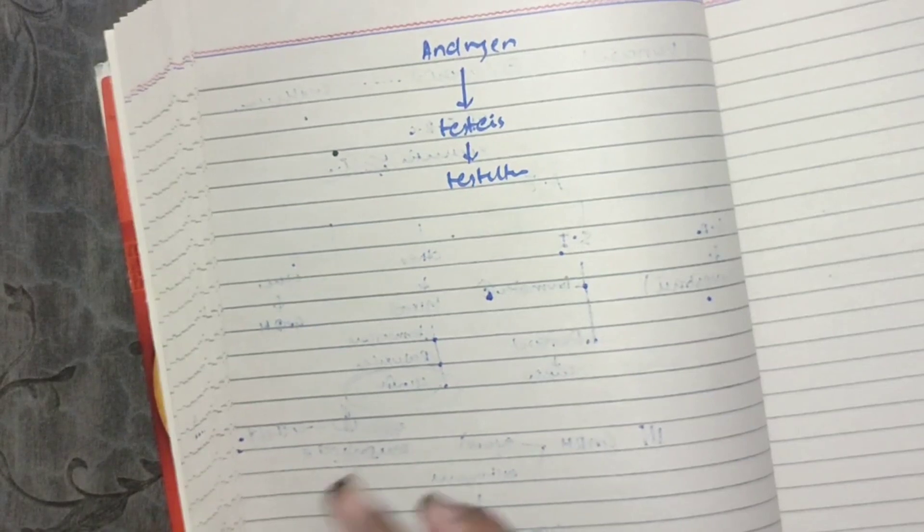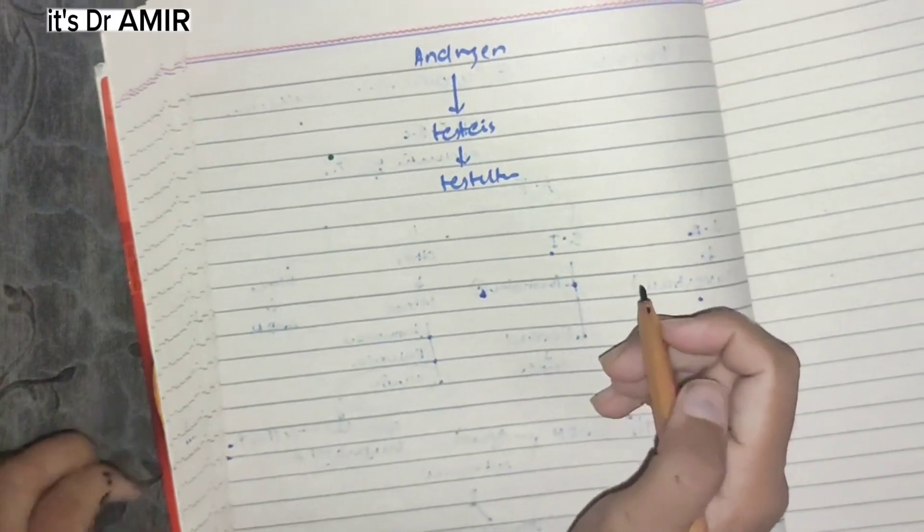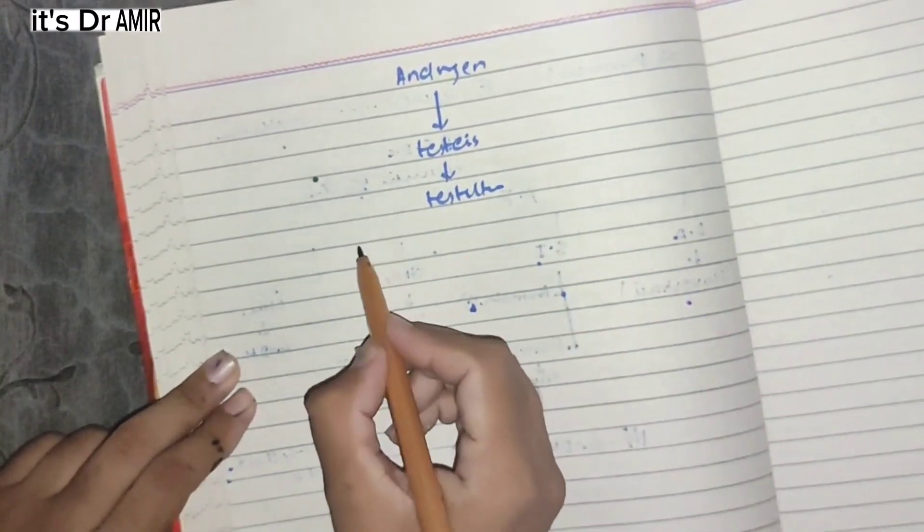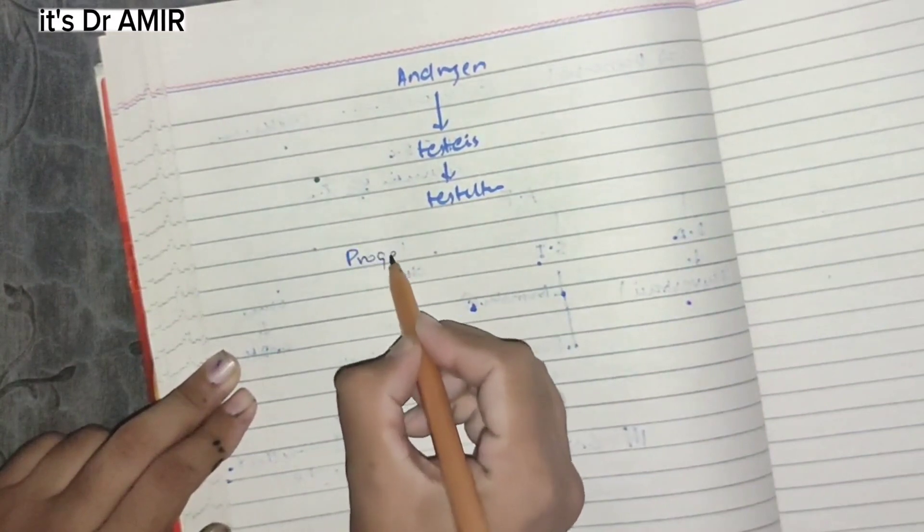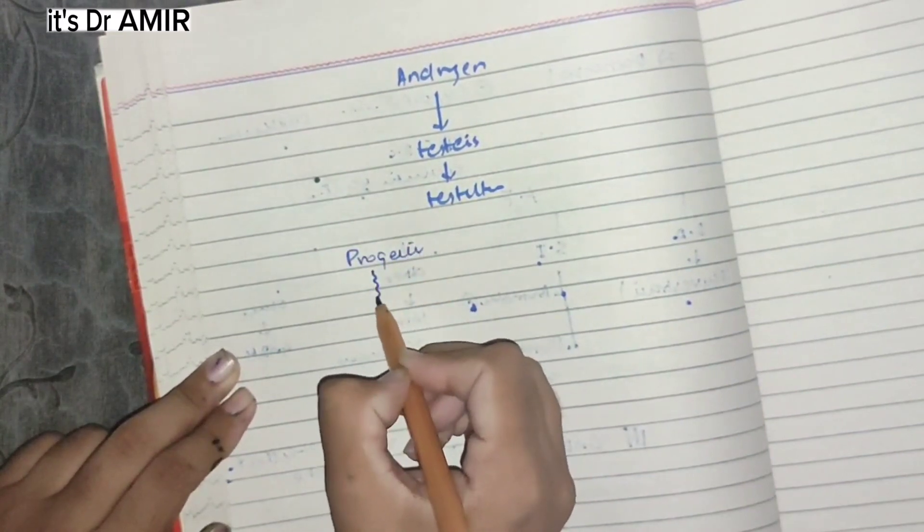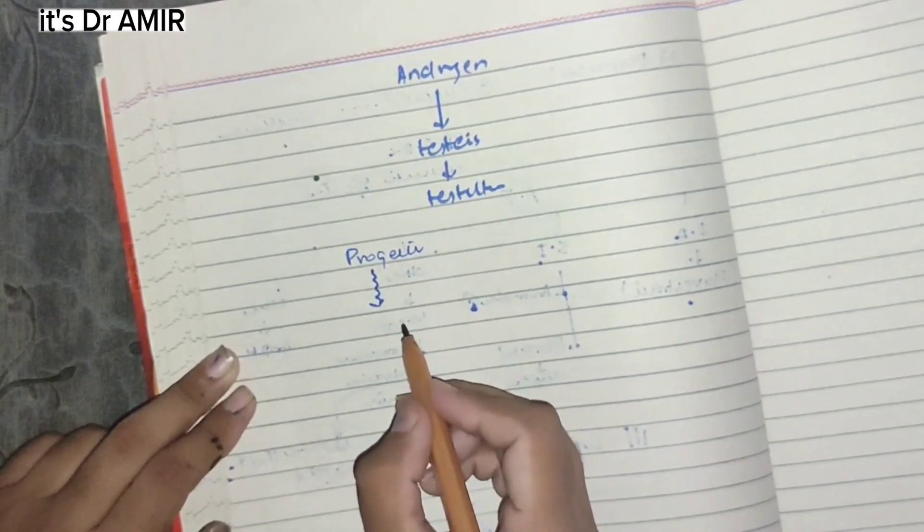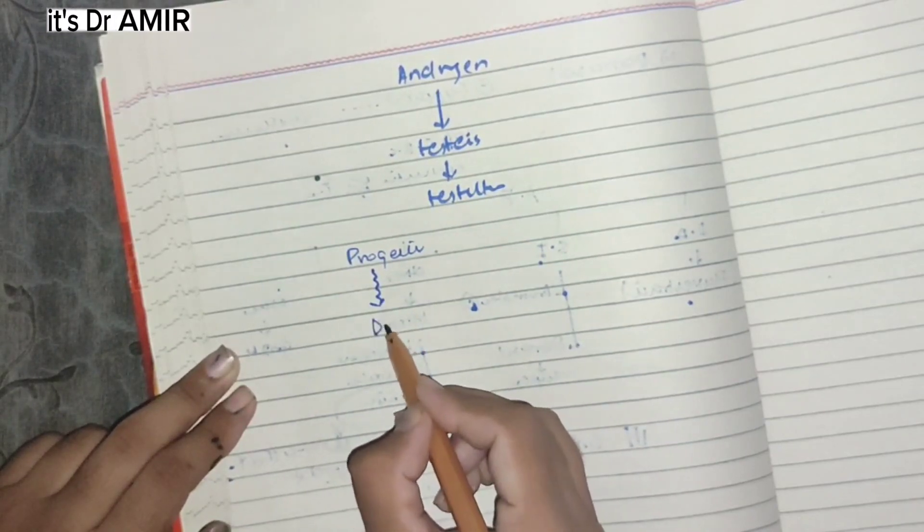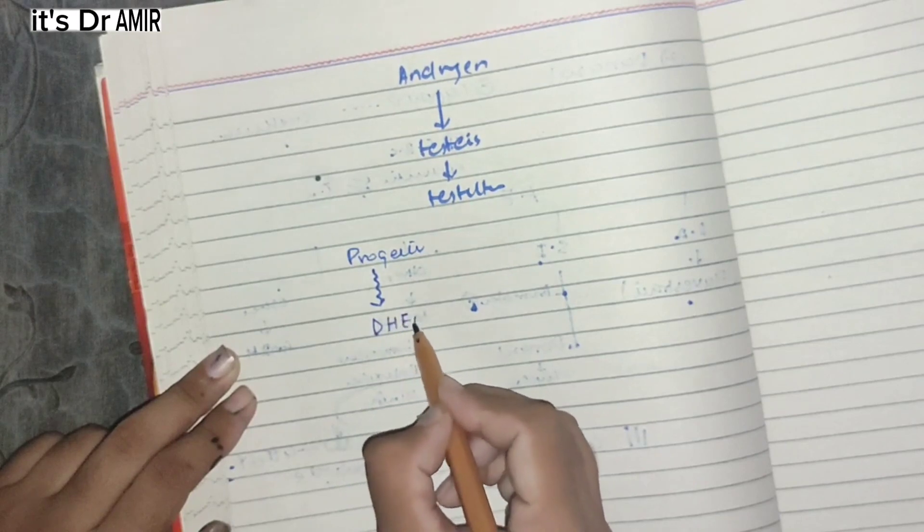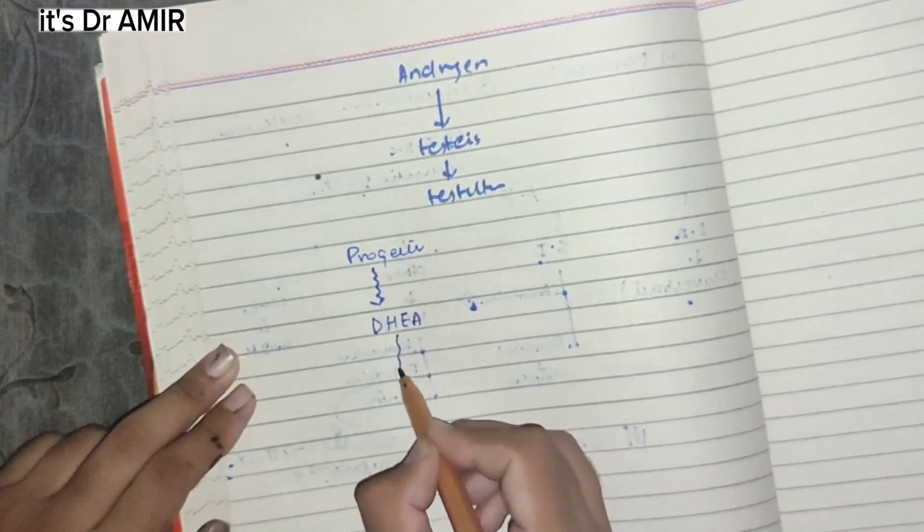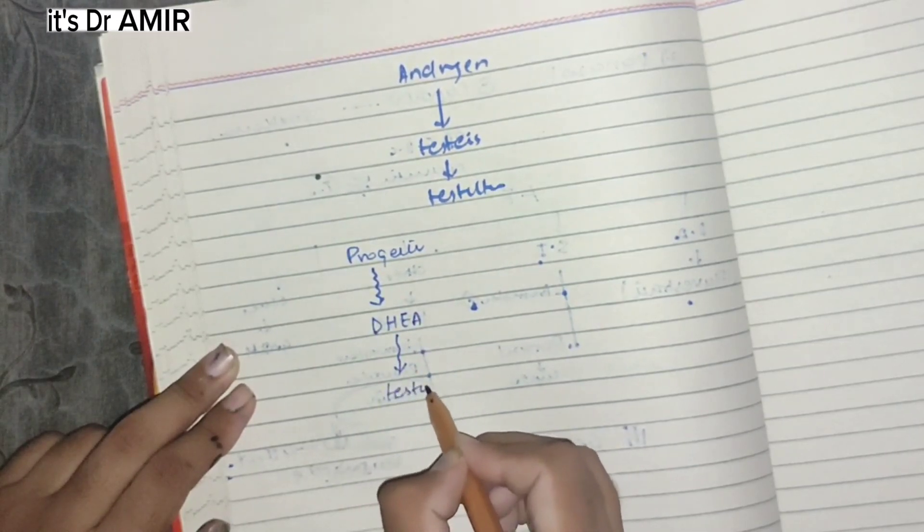Okay, so let's go to the last topic of this boring chapter. There is a male sex hormone called testosterone. It is actually derived from progesterone. Progesterone is converted into dihydroepiandrosterone (DHEA), which is then converted into testosterone.